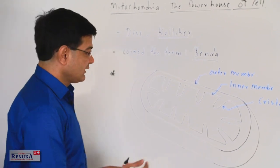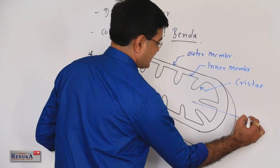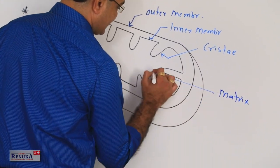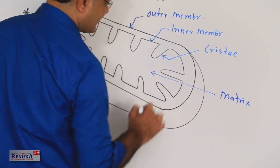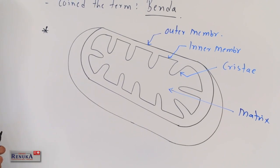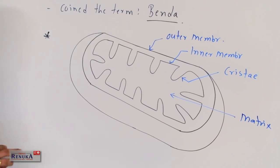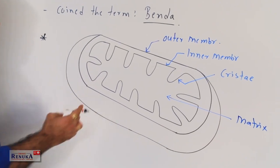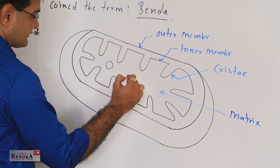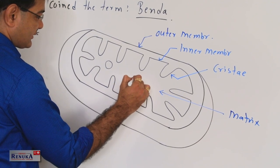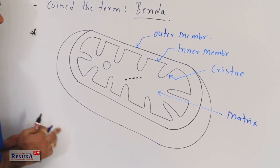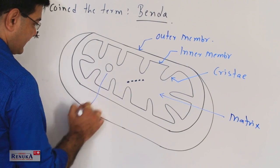The inner cavity is called the matrix of mitochondria. It is a cavity, a lumen. Inside the mitochondria, DNA is present, and ribosomes are also found inside the matrix of mitochondria.